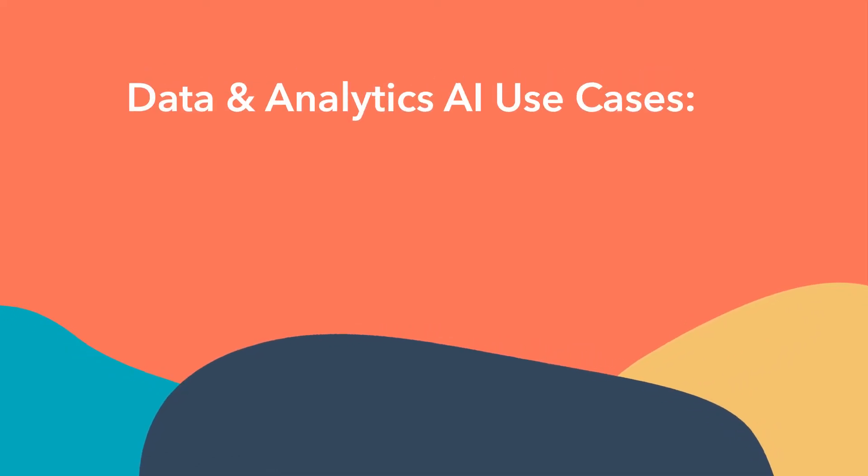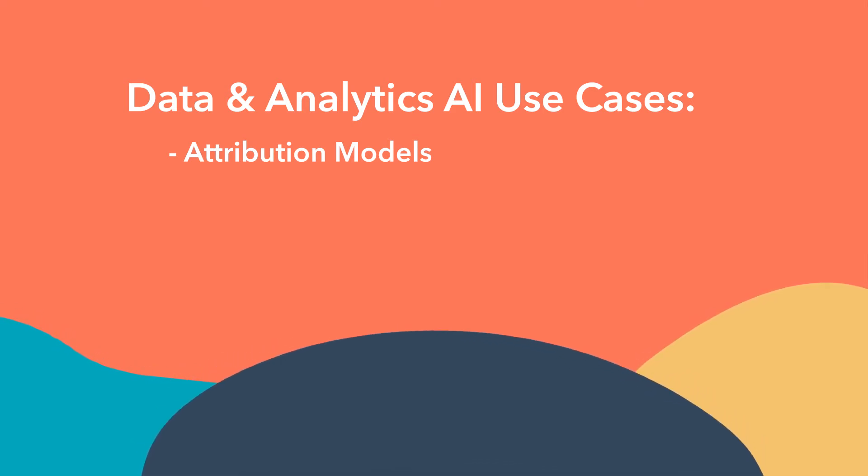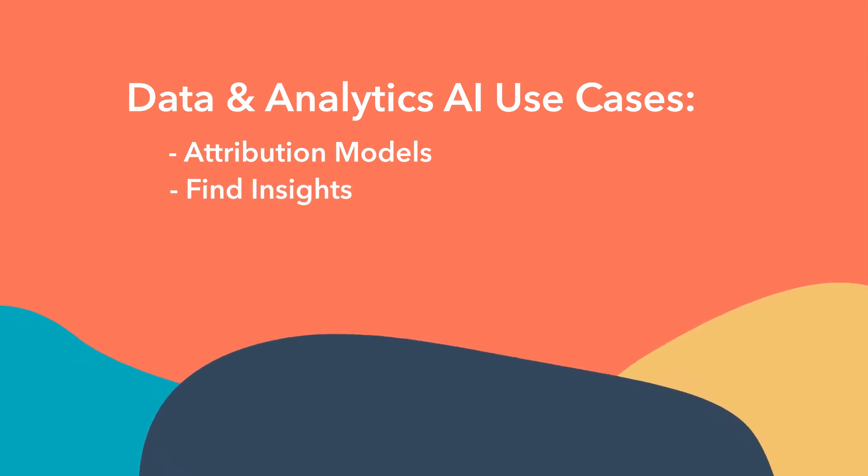Data and analytics is another area that most marketers don't love anyway. You can actually use AI to build attribution models that help you discover insights and learn more about what's contributing to conversions. You can find insights within campaign performance that you might miss, and you can generate performance report narratives. That's one we started with back in 2015 — we trained a machine to write our analytics reports, saving ourselves dozens of hours every month rather than having our people write client reports manually.